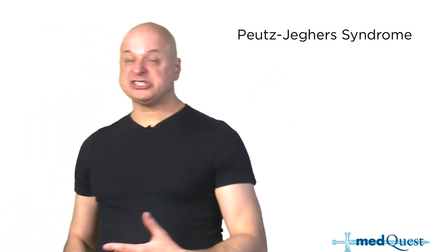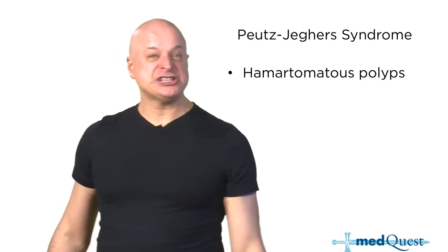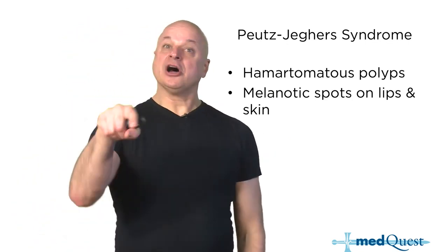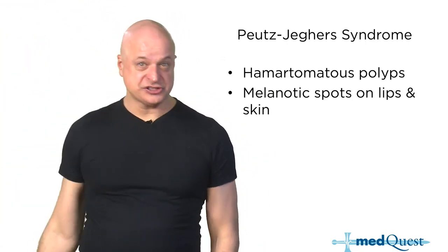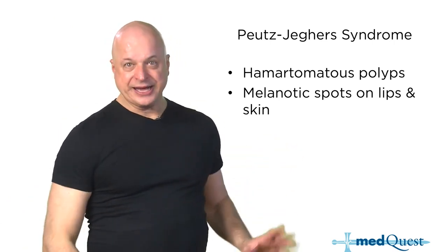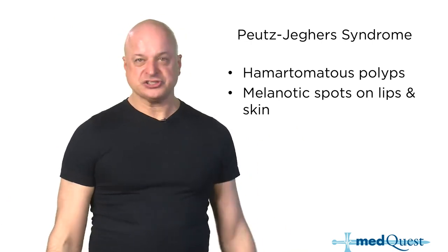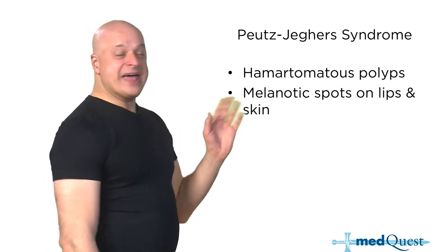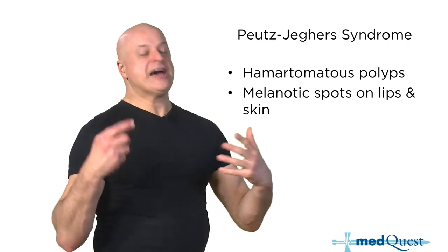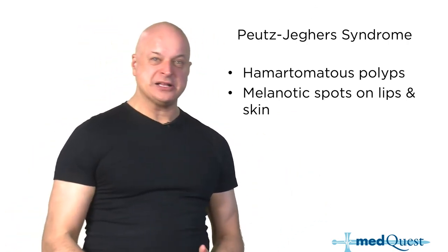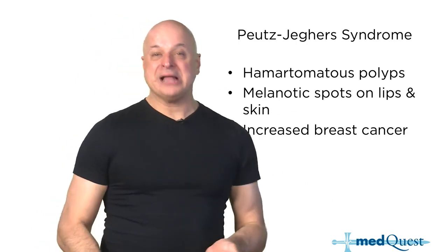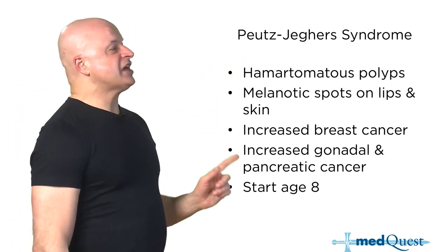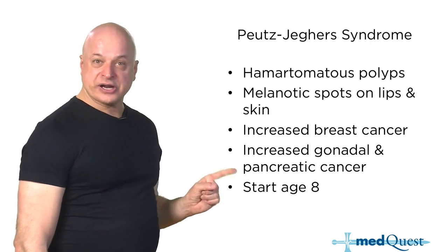Peutz-Jeghers syndrome: what stands out is melanotic spots on the lips and hamartomas. Previous editions used to say no extra screening for hamartomas, but that's incorrect — it has changed. Hamartomas have less malignant potential than dysplastic polyps but still have malignant potential. Start screening at age 8. You also need to look for all other solid organ tumors around the body.